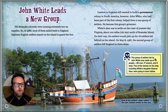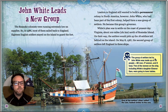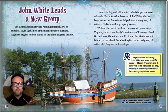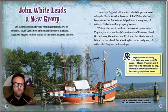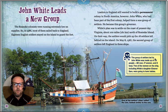The Roanoke colonists were running extremely low on supplies, so in 1586, most of them sailed back to England. Eighteen English soldiers stayed on the island to guard the fort. Leaders in England still wanted to build a permanent colony in North America. However, John White, who had been part of the first colony, helped form a new group of settlers and became this group's governor. White's plan was to settle on the coast of present-day Virginia, about 100 miles north of Roanoke Island. On their way, the settlers were to pick up the 18 soldiers left behind on the island.